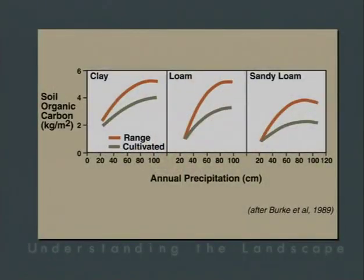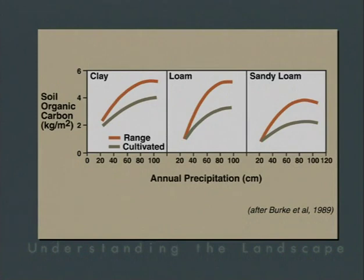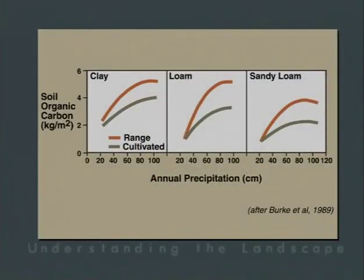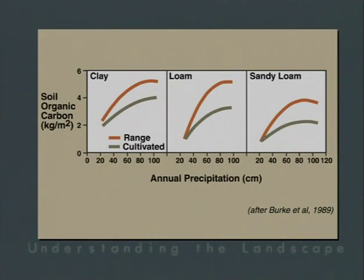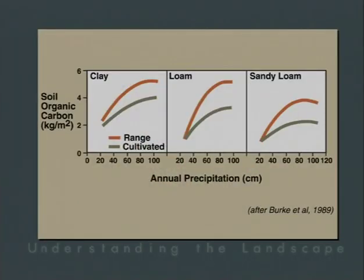Another observation is comparing rangelands versus cultivated soils in the same climatic regimes. In both systems, carbon content increases as a function of increasing precipitation across clay, loam, and sandy soils. However, there appears to be a difference between rangeland and cultivated systems — cultivation generally induces carbon loss in most natural systems. Also notable is that sandier soils have the lowest overall carbon content, while clay soils have the highest. These data are adapted from Burke in 1989.